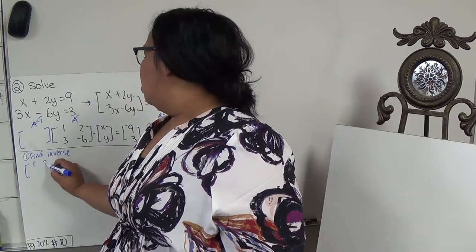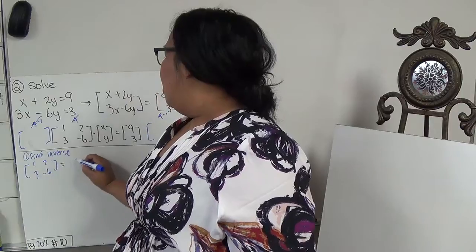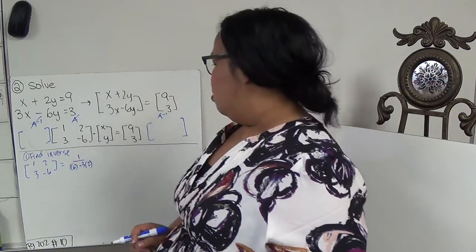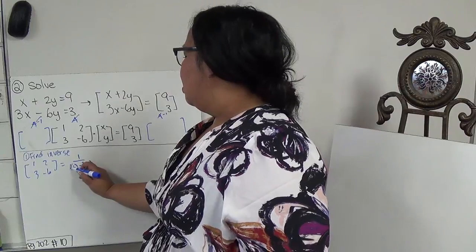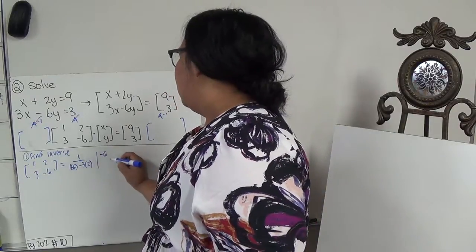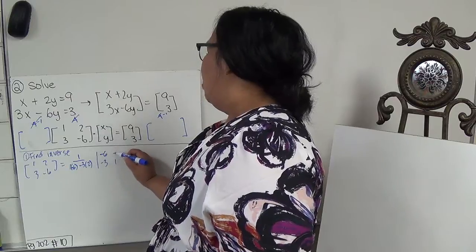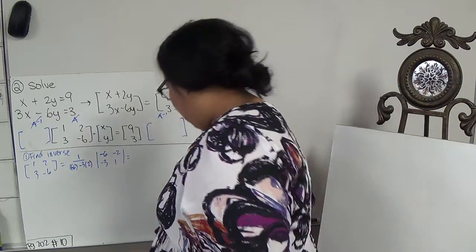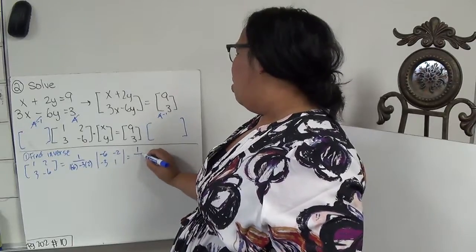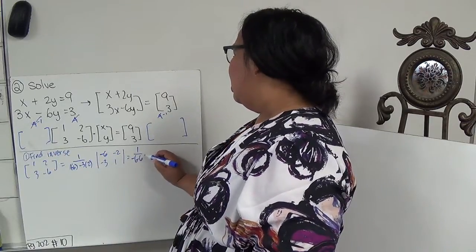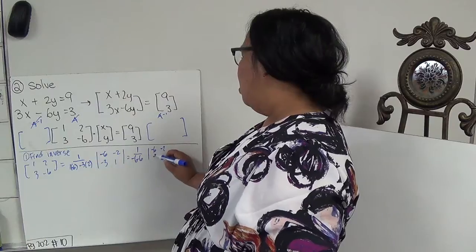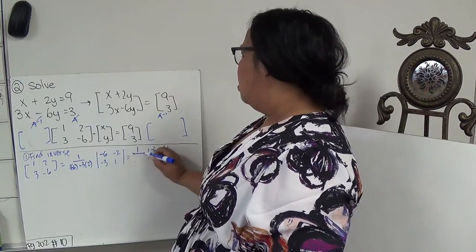So, if this is my 1, 2, 3, negative 6, my inverse would be 1 over 1 times negative 6, minus 3 times 2. And then, I'm going to take this and switch it, so this would be negative 6, 1. And I'm going to make these negative. This is from the formula. So, then we have 1 over negative 6, minus 6, which is negative 12.